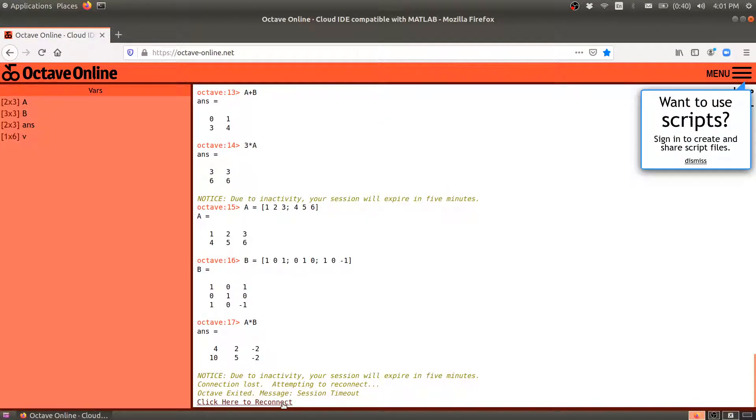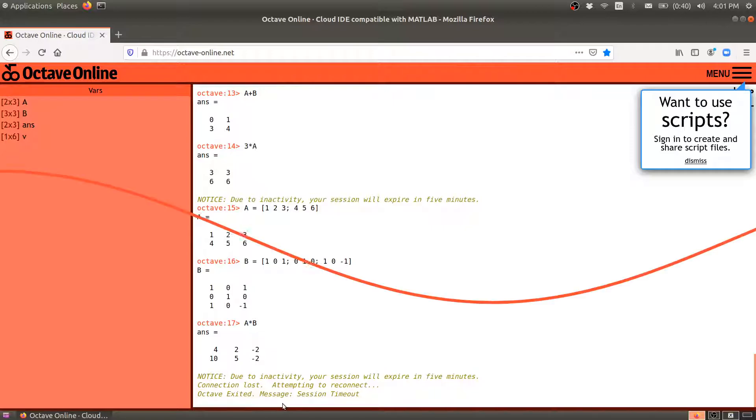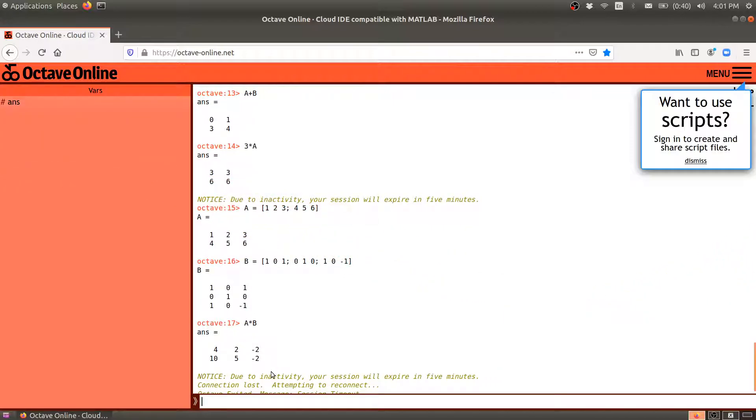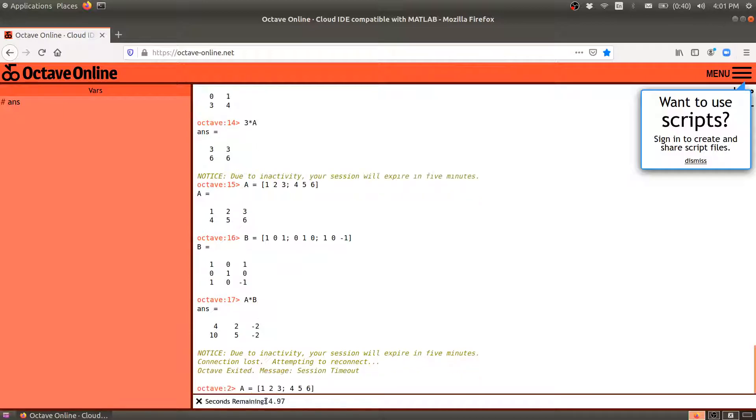And so let's make sure that this is correct. We'll go over to Octave. It went to sleep on me. So let's just wake it back up. So reconnect and see if the information is still stored. There is my matrix A. 1, 2, 3, 4, 5, 6.